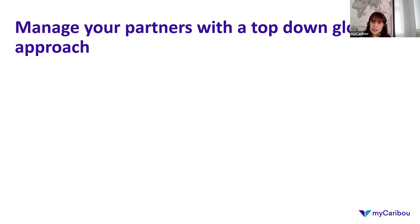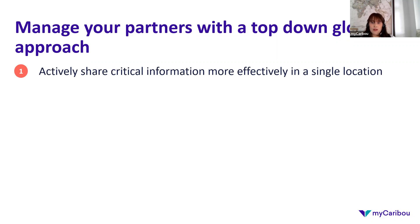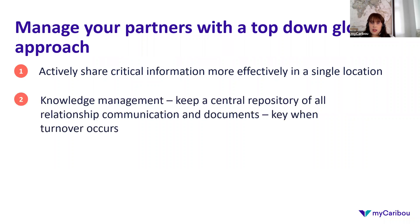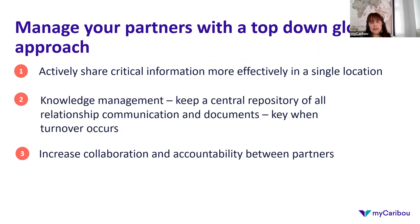This can be the difference between a $10 million company and a $20 million company — a huge impact. Being able to manage your partners with a top-down approach means that you are actively sharing critical information as soon as a change occurs. It means keeping a central repository of the entire history of an account, which is key when you experience turnover. It also means increasing collaboration and accountability between partners.